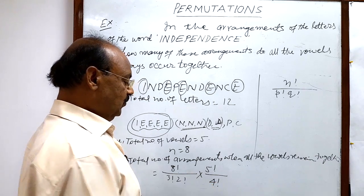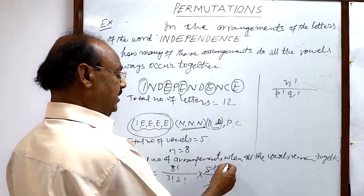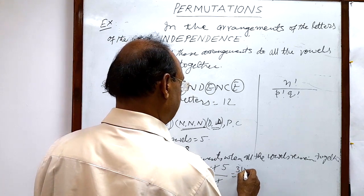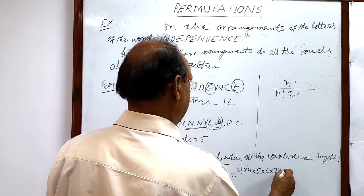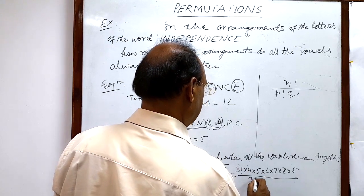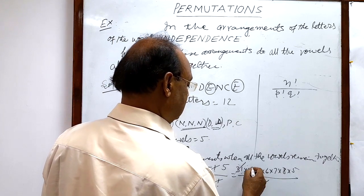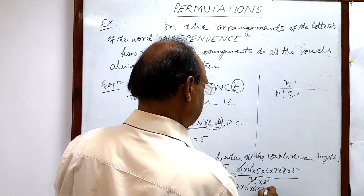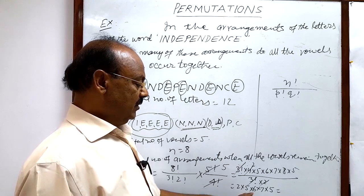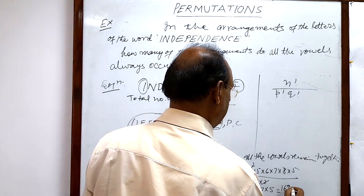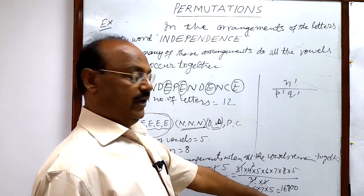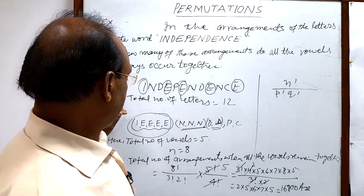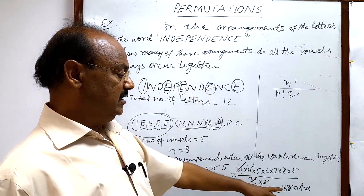So after calculation, 4! cancels with the 4! in 5!, leaving 5. Then 8! can be written as 3! × 4 × 5 × 6 × 7 × 8, the 3! cancels, and 2! equals 2, so we get 2 × 5 × 6 × 7 × 5 after cancellation. After multiplying these numbers, we get 16800. So when all the vowels are kept together, the total number of arrangements is 16800.